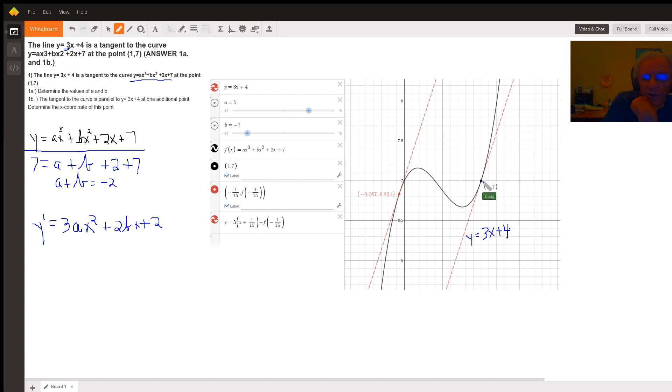So at this point right here, (1,7), that red line has to have a slope of 3. So that means if I put 1 in for x, I will get 3 for y prime. So if I put 1 in for x, I get 3a, I get 2b, and a plus 2. Or 3a plus 2b equals positive 1.